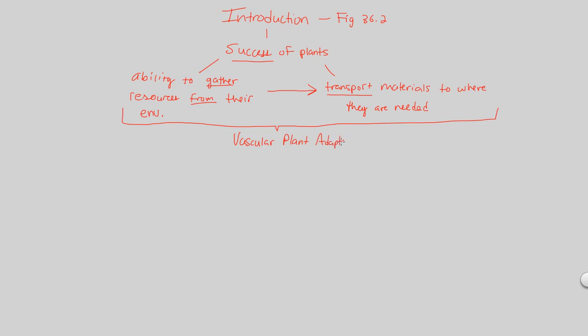What makes these plants successful in their gathering of resources and in their transport of materials. Materials and resources would essentially mean the same thing here. So vascular plant adaptations. What are they?